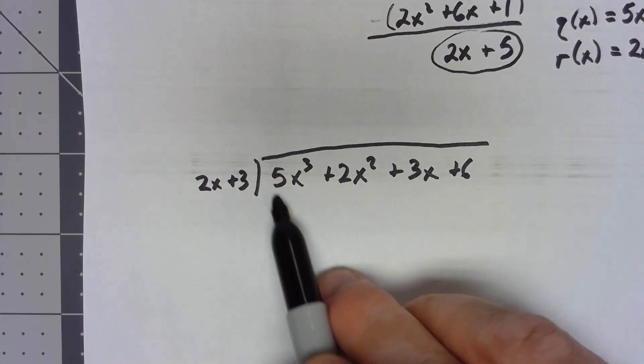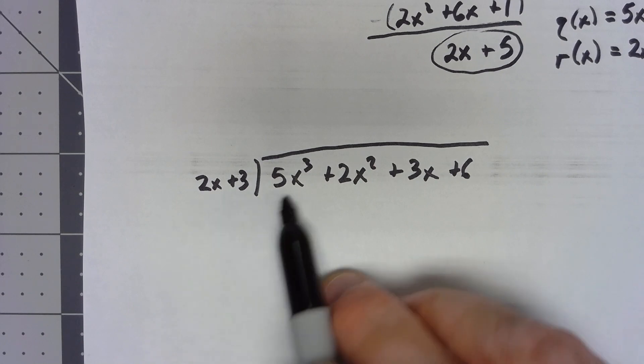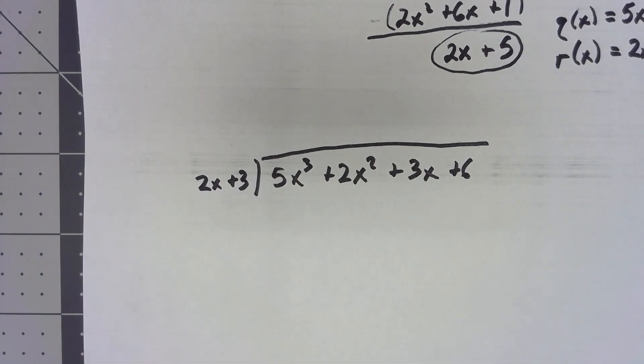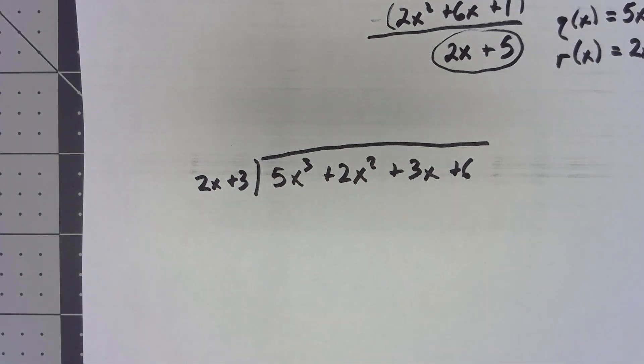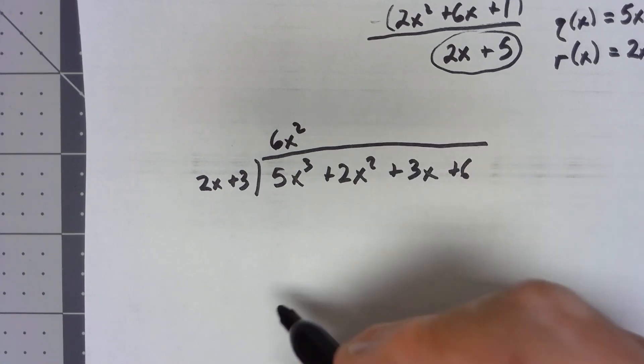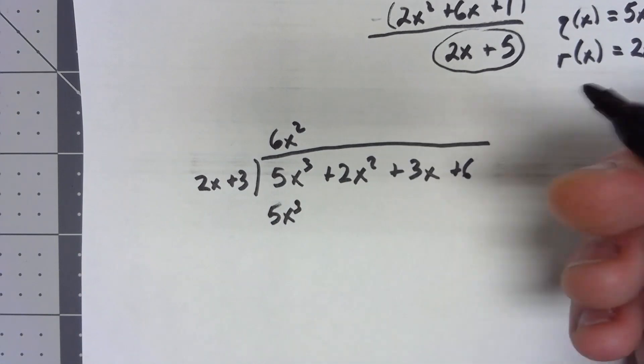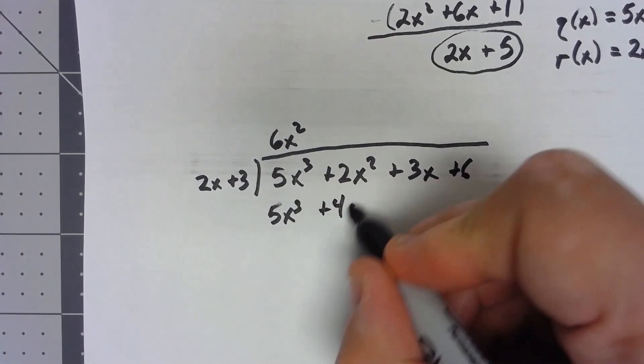So, the easiest way to think about this is, okay, there's nothing I can multiply 2 by to get 5, certainly not an integer anyway, but 5 is the same thing as 12 in Z7. So, if I put a 6x squared up there, then it works. 6x squared times 2x is 12x cubed, which is really 5x cubed. We get 18x squared, which is 4x squared. Well, actually that's the whole thing. So, then we subtract. That cancels out. Negative 2x squared is really 5x squared. Bring down the 3x.